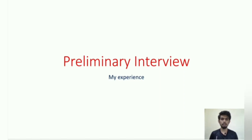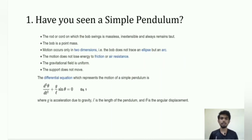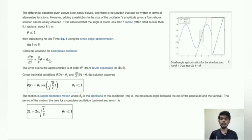In the preliminary interview, they asked me to choose two areas from which they would ask questions. I chose classical mechanics and electrodynamics. They started with classical mechanics — the very first question was whether I had seen a simple pendulum. The fact is no one has ever actually seen one, because it's an idealization requiring assumptions that lead to a differential equation, and then a small angle approximation sin θ ≈ θ, giving the harmonic oscillator equation and the formula T = 2π√(l/g).